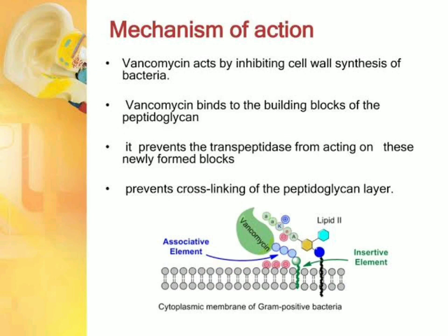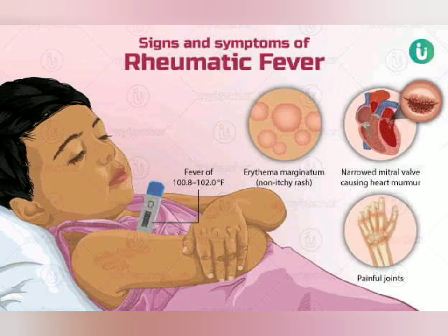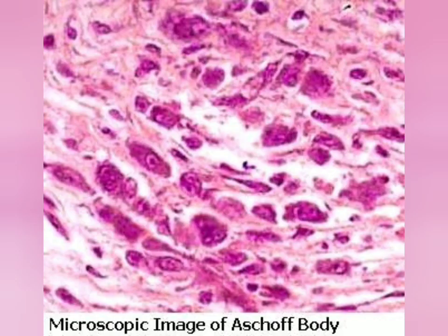Acute rheumatic fever and acute glomerulonephritis are two important non-suppurative sequelae of Streptococcus pyogenes. The essential lesion in rheumatic fever is carditis, including connective tissue degeneration of heart valves and inflammatory myocardial lesions characterized by Aschoff nodules.